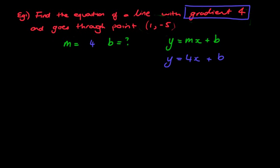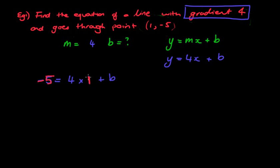Now, the x and y in the equation represent a set of coordinates. If a coordinate lies on the straight line, when I substitute it in — for example, y equals minus 5, gradient equals 4, x equals 1 — if I substitute those values into my equation, then the left-hand side will equal the right-hand side. That's the only way it can lie on the line. So if we substitute in, we have minus 5 equals 4 times 1 plus b, and now I've got b by itself to solve for.